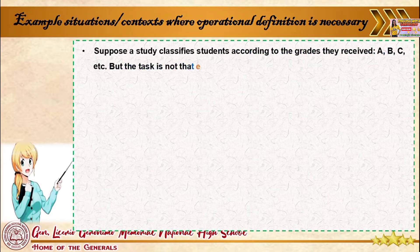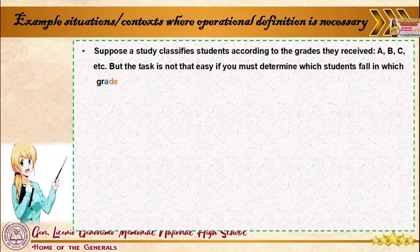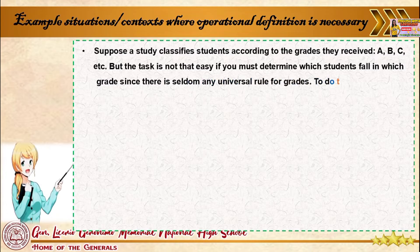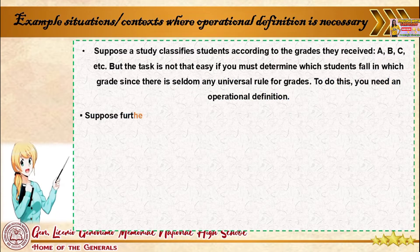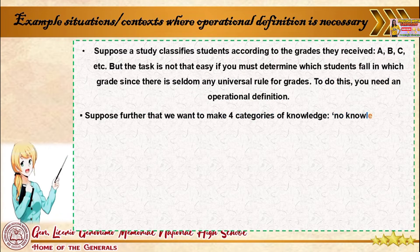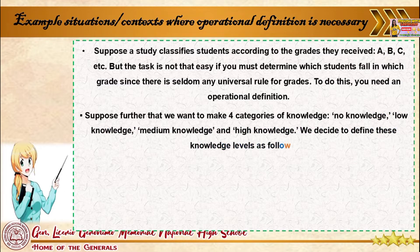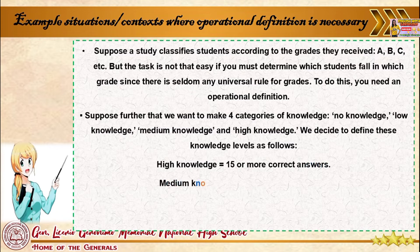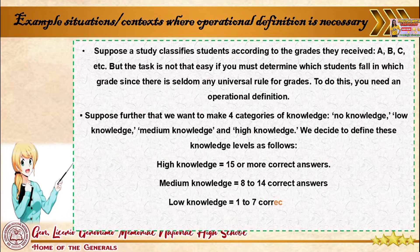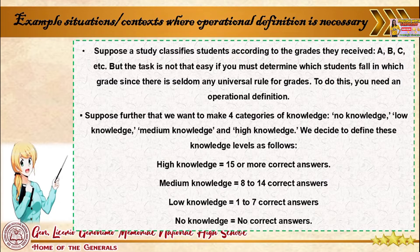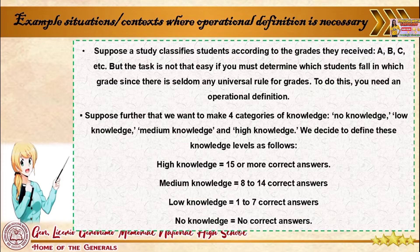Suppose a study classifies students according to the grades they received — A, B, C, etc. — but the task is not easy if you must determine which students fall in which grade, since there is seldom any universal rule for grades. To do this, you need an operational definition. Suppose further that we want to make four categories of knowledge: no knowledge, low knowledge, medium knowledge, and high knowledge. We decide to define these knowledge levels accordingly.